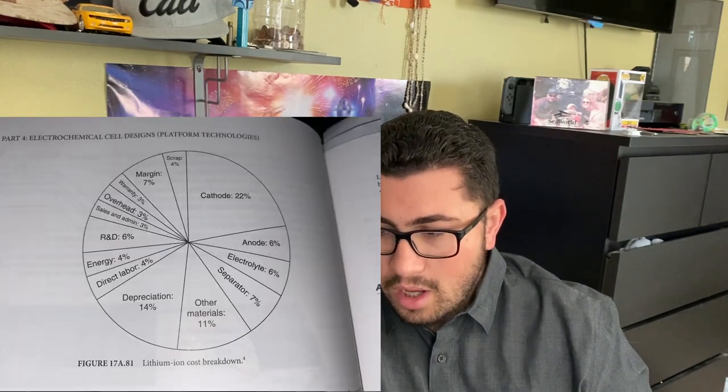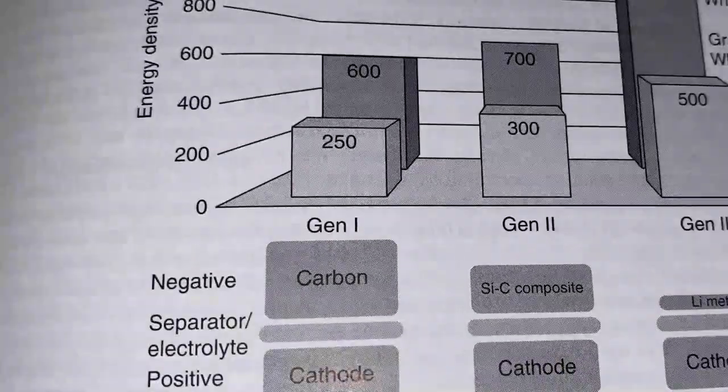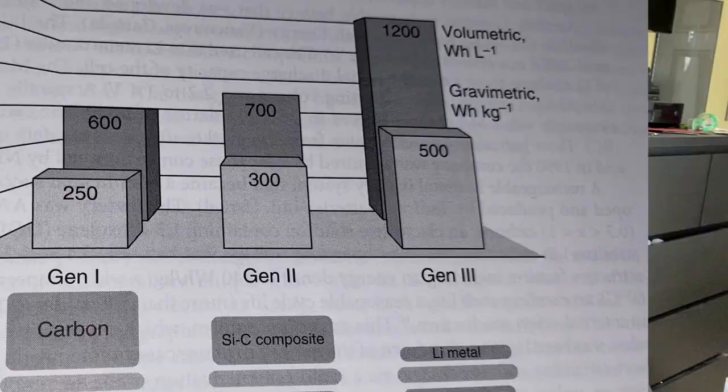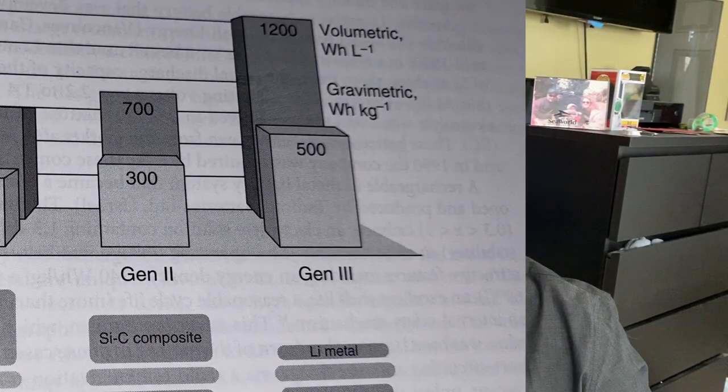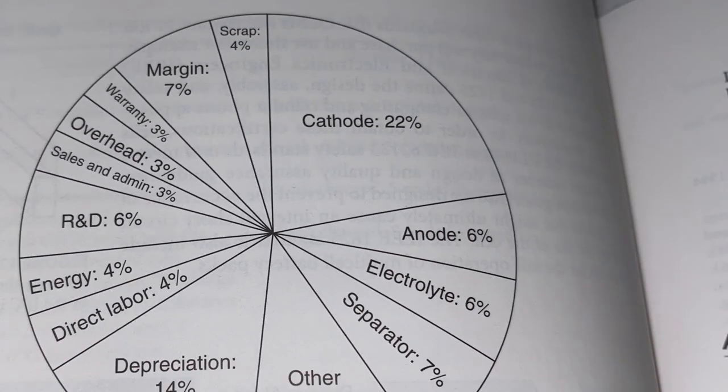We're going to have a separate video going into a lot more detail on that. Next we have the anode, which is the negative electrode of the cell. It's generally going to use graphite, and more advanced ones will use a combination of graphite and silicon. In the future, they're considering using sulfur or even lithium metal as the anode in next-generation cells, but right now it's generally graphite with a little silicon mixed in. The anode represents around 6% of the cell cost and is also a very important part of the cell.